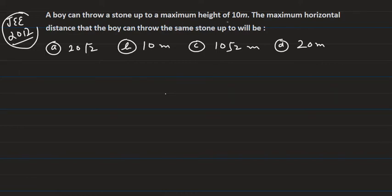A boy can throw a stone at maximum height of 10m, and we are asking the maximum horizontal distance that the boy can throw the same stone up to. So how far can it throw the stone horizontally which it can throw to a maximum height of 10m?